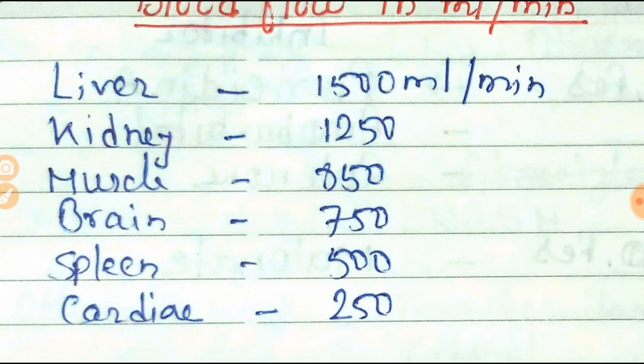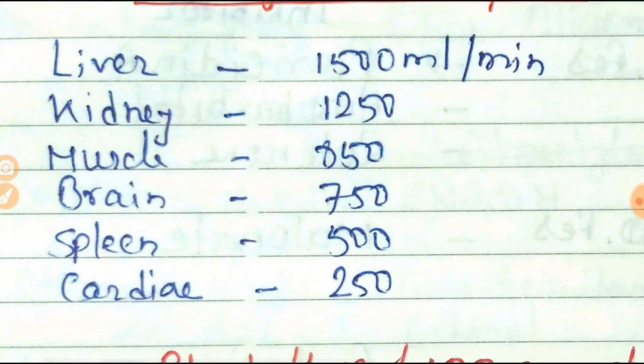Muscles have 850 ml per minute, brain 750 ml per minute, spleen 500 ml per minute, while cardiac is 250 ml per minute. So most of the blood flow is in the liver, and the pumping organ — cardiac — is only 250 ml per minute.